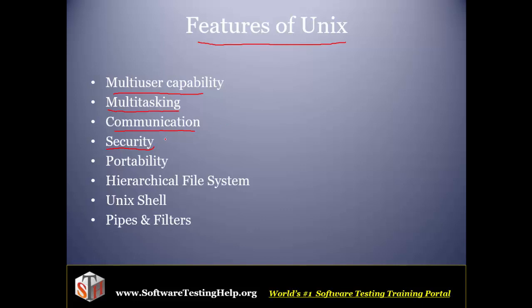Unix security is powerful in the sense that whenever we want to log in to Unix, we need a username and password, so that makes it secured. The other aspect is that it provides different permissions for files. So let's say a person has created a file — he can give different permissions to himself and to others who are going to access that file.